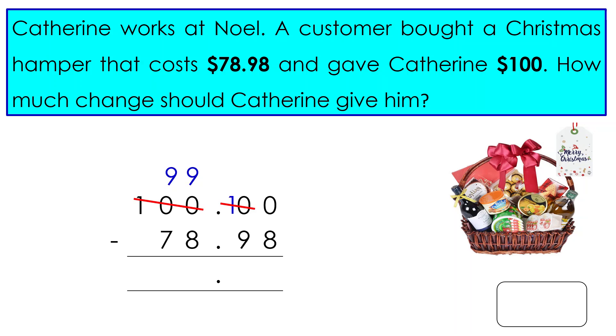Now, we write 9 as the remaining $0.10 value and $1.10 is carried forward to the $0.10 position. Now, we can do the subtraction.